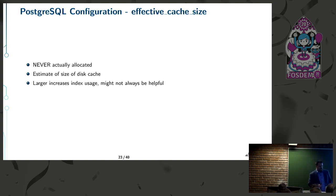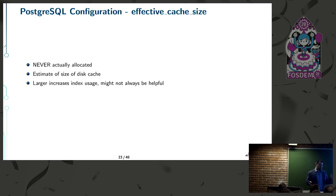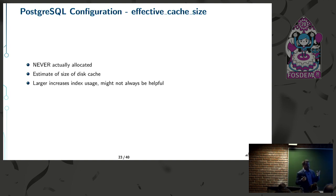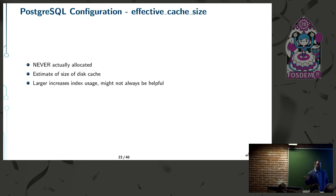effective_cache_size is a parameter not everybody thinks about — it's never actually allocated. It's an estimate of the size of the disk cache, and Postgres uses it to decide whether a page is likely to be in memory. If it's in the disk cache, Postgres can pull it back more efficiently without going to disk, which might lead it to prefer an index scan over a sequential scan.